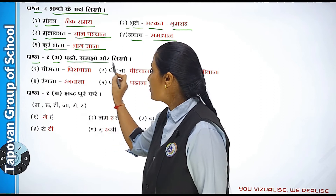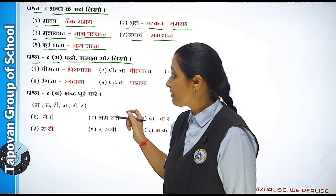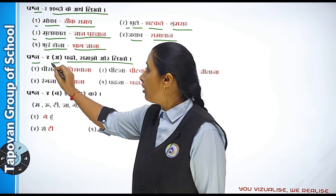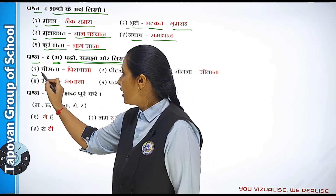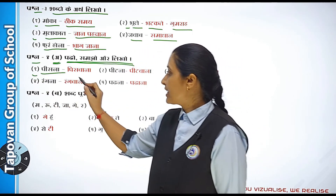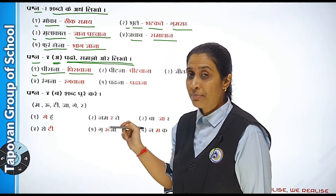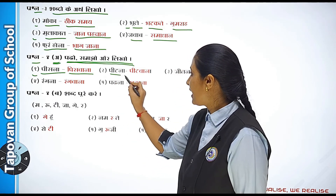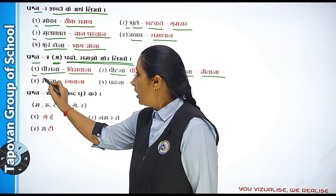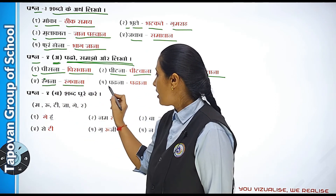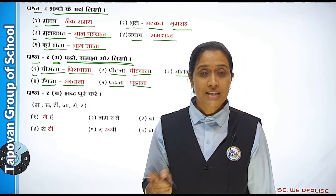Uske baad hai: padho, samjho aur likho. Aapko padhna bhi hai, samajhna hai aur likhna bhi hai apni notebook mein. Jaise — 'pisna' toh uske saamne 'pisvana,' 'pitna' toh 'pitvaana,' 'jitna' toh 'jitaana,' 'ragana' toh 'ragvaana,' 'padhna' toh 'padhaana.' Toh aapko shabd padhne bhi hain, samjhne bhi hain aur likhne bhi hain.